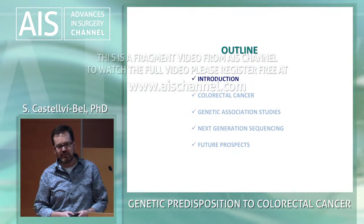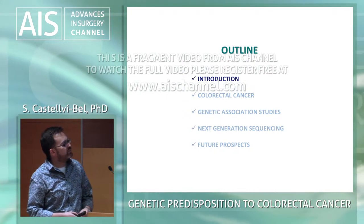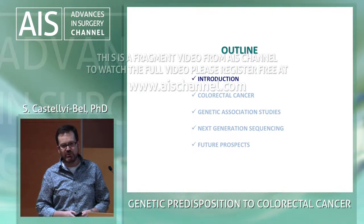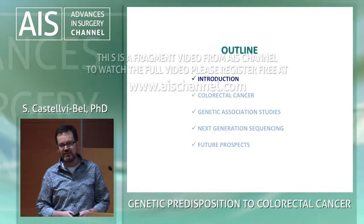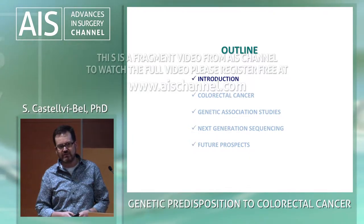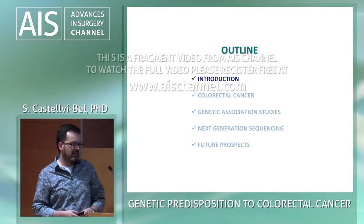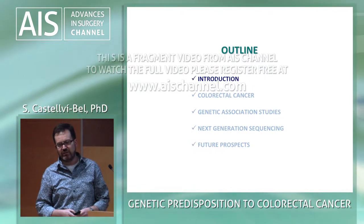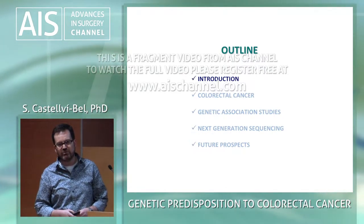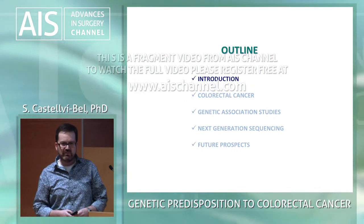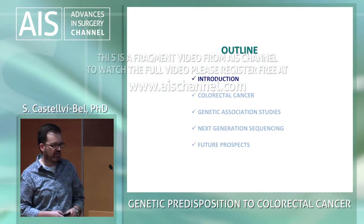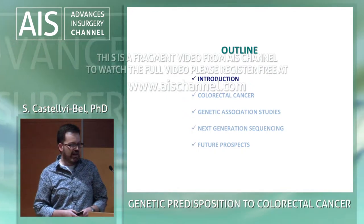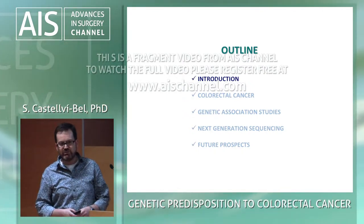Then I'll move on to genetic association studies, which was the first approach that we used to study the germline genetic predisposition to this disease. After that, I'll continue with next generation sequencing, which is the second approach we have used — and actually the main part of my talk and the most active research line in our group right now. I'll end with some future research prospects.